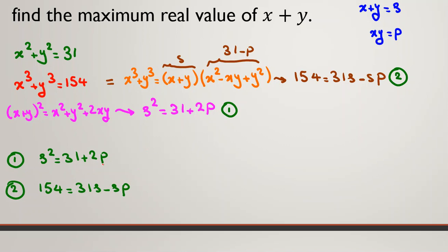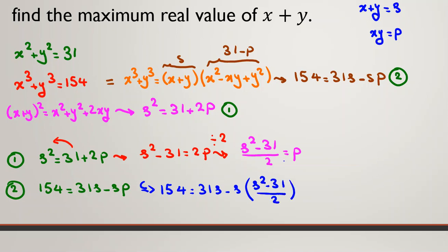I want to get rid of P. I use a replacement. From first one, I take 31 to left-hand side. It will be S squared subtract 31 from both sides equal to 2P. Then divide both sides by 2. We will have S squared minus 31 all over 2 equal to P. Now I replace this P in second equation. 154 equal to 31S minus S times P, which I replace here, S squared minus 31 over 2.